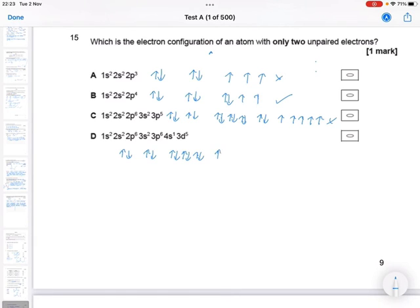3p6, so remember they don't pair up until they have to. 4s2, 4s1, and then 3d5, so one, two, three, four, five. Which means the answer is B.